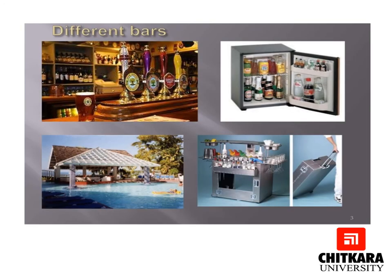Here we can see various types of bars. In the first photograph, we can see bar kegs from which raw beer is dispensed, and in the back the display bar where all the bottles are displayed, contributing to the overall visual appeal. In the second photograph, we can see a mini bar. A mini bar is present in almost all hotel categories and has a variety of beverages — spirits, beers, water, sodas, soft drinks — as well as nuts, crackers and chocolates, all on a chargeable basis.